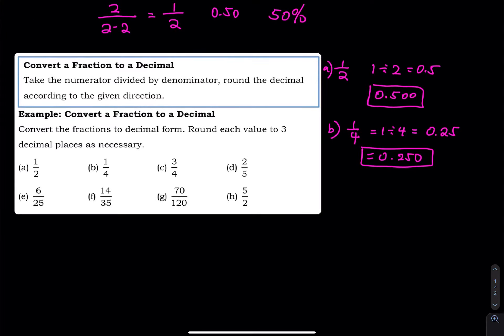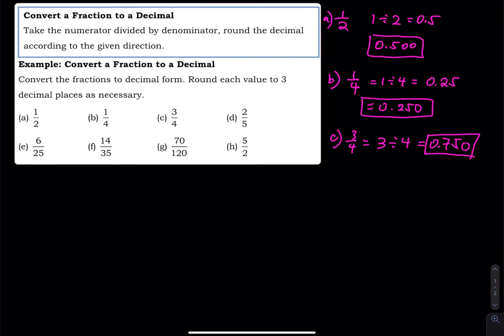Part C is 3 over 4. That equals 3 divided by 4 — 3 quarters — which is 0.75. Keep one more zero to make it 3 decimal places: 0.750. That's how we convert a fraction to a decimal.